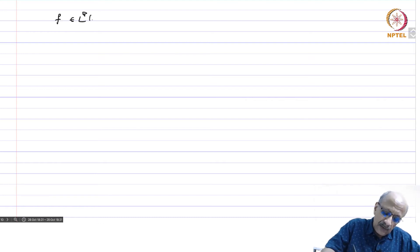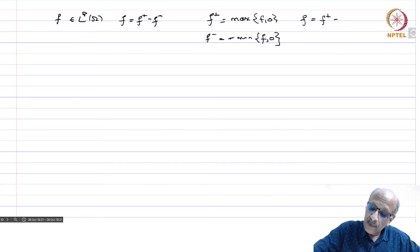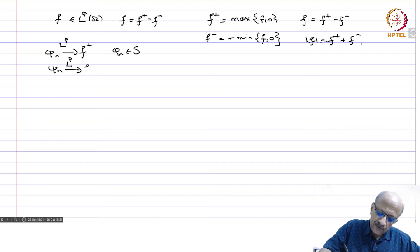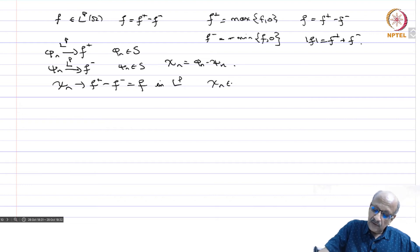If f belongs to Lp of omega, write f equals f plus minus f minus, the positive and negative parts. Both are non-negative, and mod f equals f plus plus f minus. Then phi_n converges to f plus in Lp with phi_n in S, and psi_n converges to f minus in Lp with psi_n in S. Setting chi_n equals phi_n minus psi_n, chi_n converges to f in Lp and chi_n belongs to S. This proves the theorem.